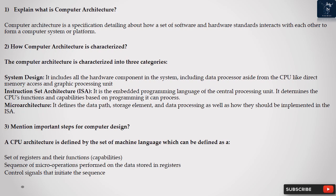Question 2: How Computer Architecture is Characterized? The Computer Architecture is characterized into three categories. System Design: it includes all the hardware components in the system, including data processors aside from the CPU like Direct Memory Access and Graphic Processing Unit.